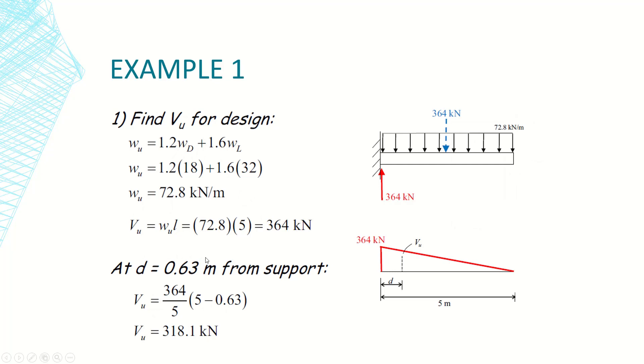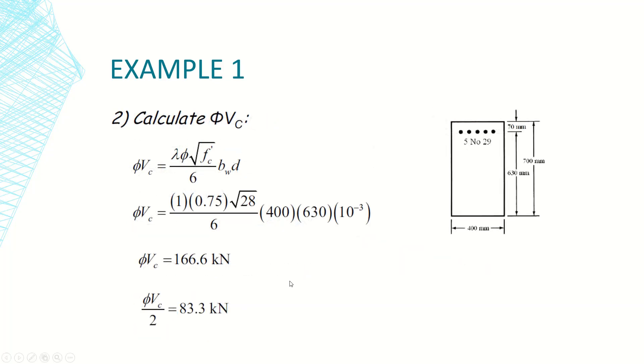Now the second step is to determine the shear strength of the concrete. Phi Vc as per code is equal to lambda phi radical f prime c over 6 b web d. Lambda is equal 1 for normal weight concrete, phi for shear is equal to 0.75, radical f prime c is radical 28.